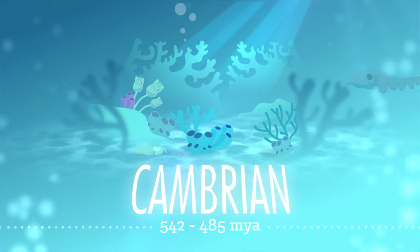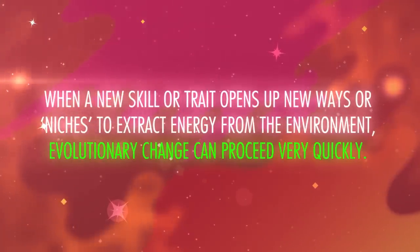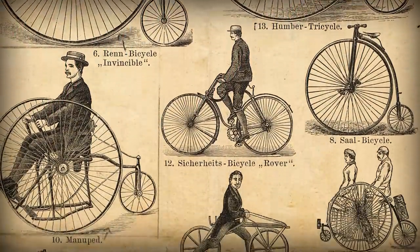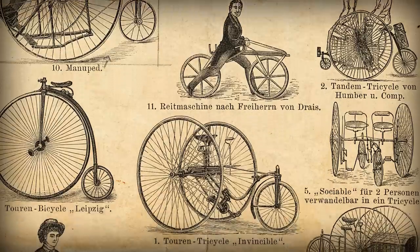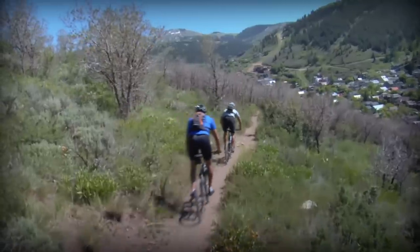People often compare the Industrial Revolution to the Cambrian explosion about 540 million years ago. When a new skill or trait opens up new ways or niches to extract energy from the environment, evolutionary change can proceed very quickly. In the Cambrian explosion, that evolutionary change was biological. In the Industrial Revolution, that increased pace of change was cultural. Consider bike design. In the 1800s, there were many, many different designs for bikes, some of which look amazingly, terrifyingly unsafe. In the beginning of innovations for bicycles, a huge number of designs filled all the available niches. Eventually, those designs started competing with each other, and a few forms won out: the road bike, the mountain bike, and the BMX bike. Just a little bit different variations of the same thing.